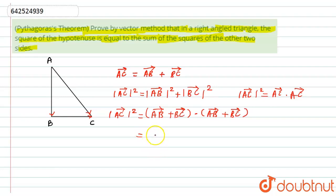So from that formula I can write here the mod of AB vector squared plus mod of BC vector squared plus 2 into AB vector dot BC vector.